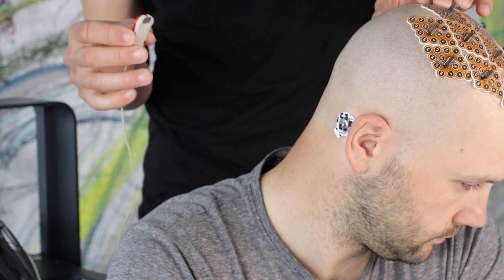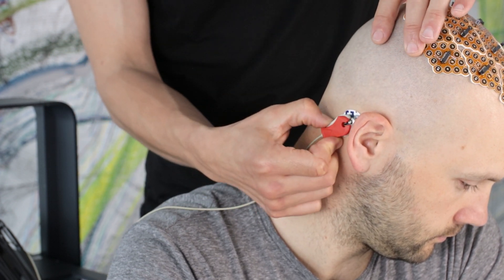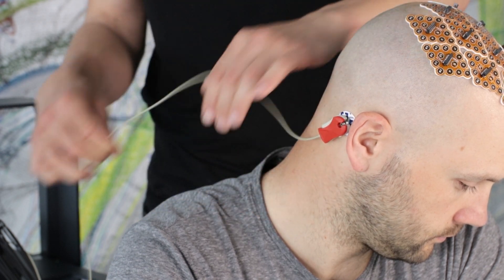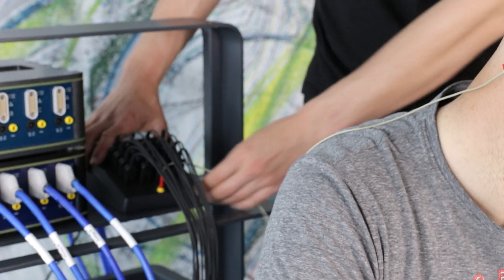As a first step you connect the ground clip to the Mastoid ground electrode. Make sure that the cable is connected to the Pangolin connector box at the ground socket.